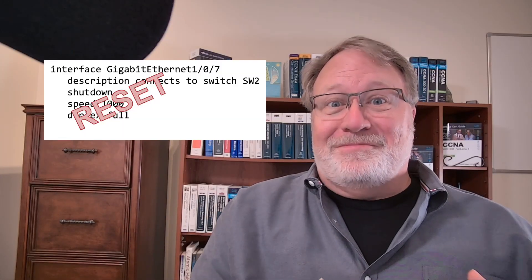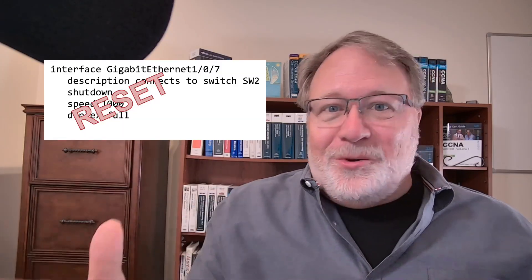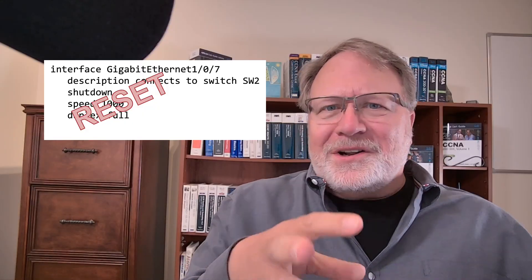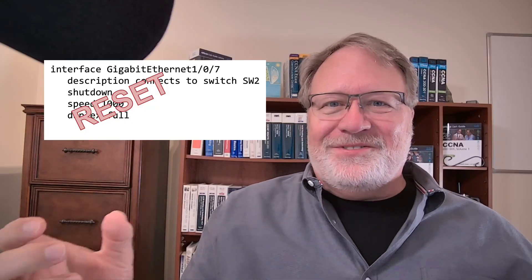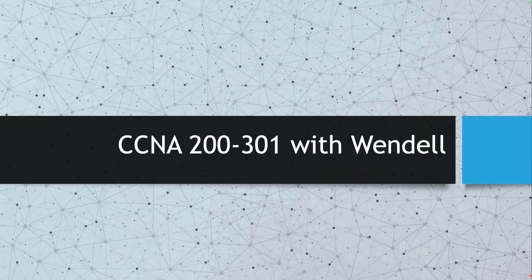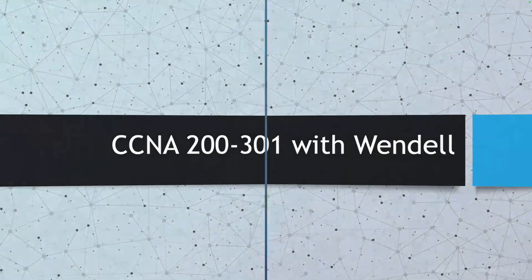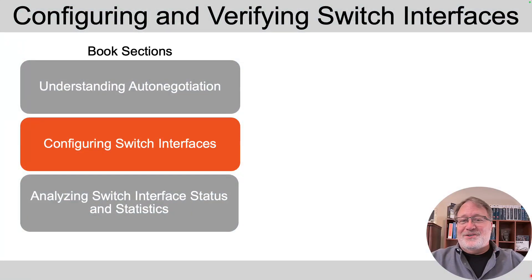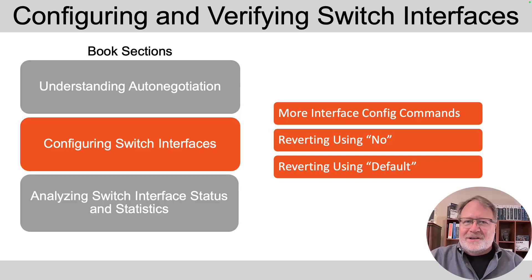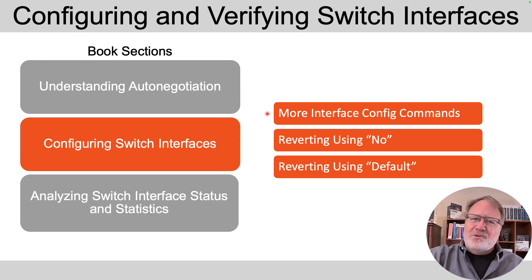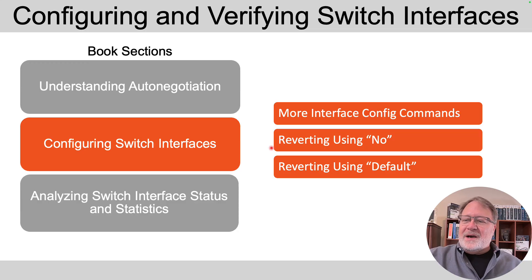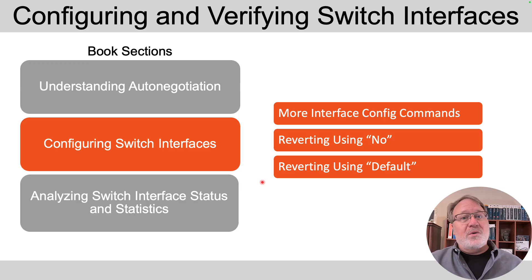We've been talking about different interface subcommands on switches for a while now. In this video we're going to add a couple more, but in the second half we're going to talk about how to revert back to the original default settings. The point of this video is to discuss a couple of important interface subcommands having to do with enabling interfaces, documenting interfaces, and moving around the command line interface. Then we'll talk about how to revert back to the default settings with the no command and the default command — useful for the exam and also for real life.